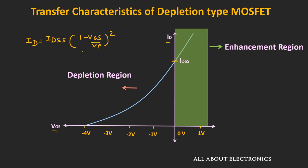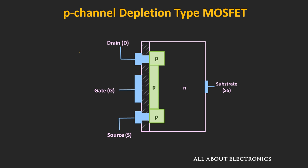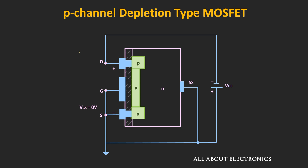So far the discussion was only for the N-channel MOSFET. Similarly, let us briefly talk about the P-channel type of MOSFET. In case of a P-channel depletion type of MOSFET, the channel is made up of P-type semiconductor material and the substrate is N-type. For the P-channel MOSFET, the polarity of the applied voltage will also get reversed — Vds will be negative and Vgs will be positive. First, let us see how the current flows when Vgs is equal to 0.